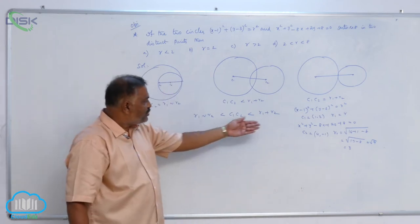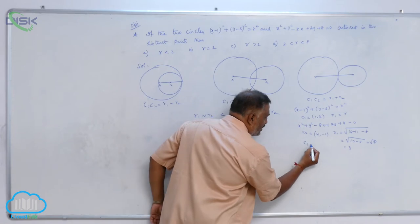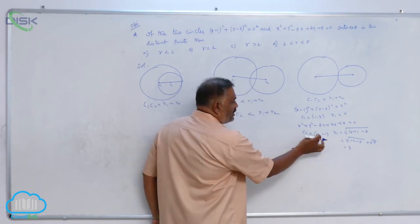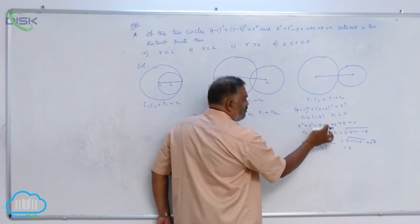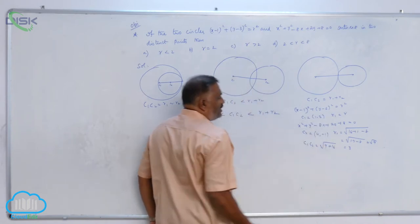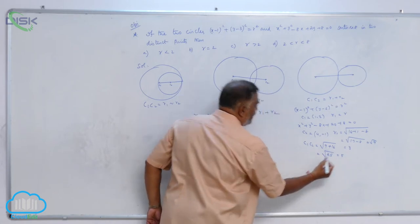Now substitute these values. We require C1C2 also. C1C2 equals the square root of (4 minus 1)² which is 9, plus (3 plus 1)² which is 16. So this is root 25, which equals 5.